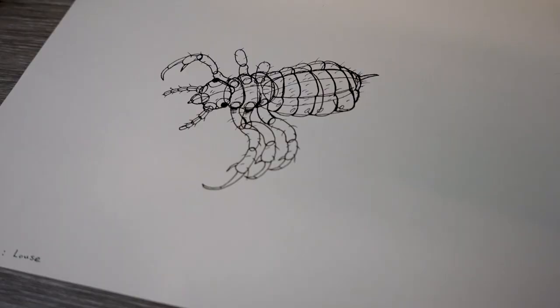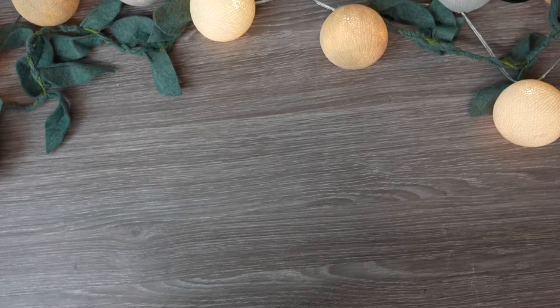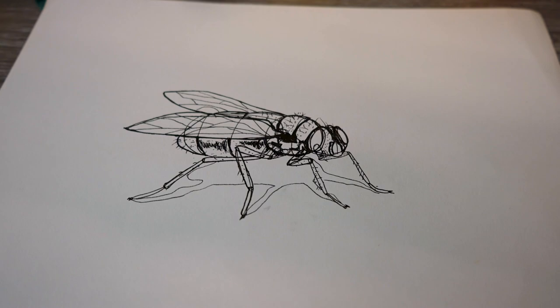He used a sculpting analogy which I really liked. So imagine you're putting down the shape as if it's a lump of clay and then you're carving out the form from that foundation.